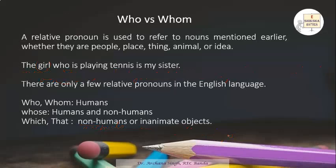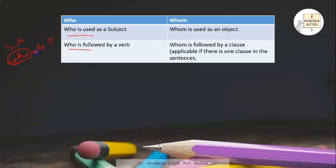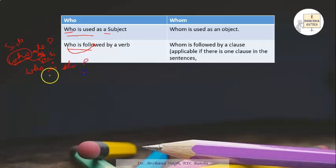Now let's study the rules of who and whom. A trick: 'who' is used as a subject and is always followed by a verb. For example, 'Who ate?' — 'who' is the subject and 'ate' is the verb, fulfilling both rules. Another example: 'Who is she?' — 'who' is again a subject followed by a verb, fulfilling both rules.